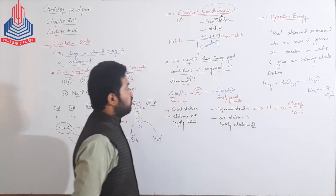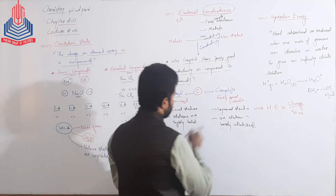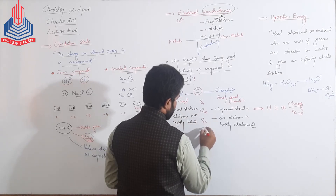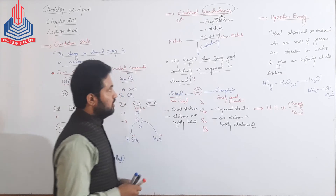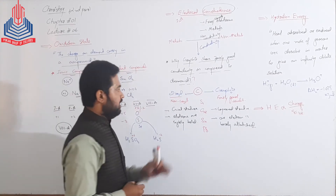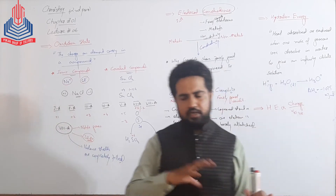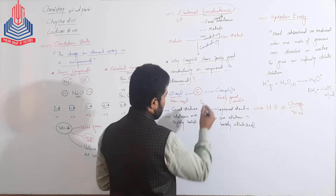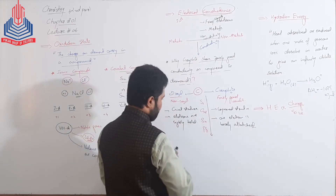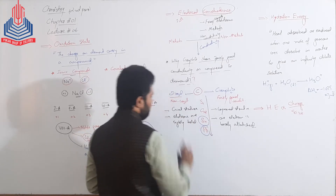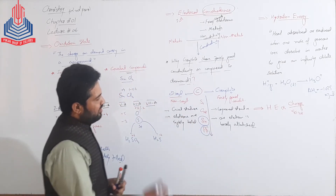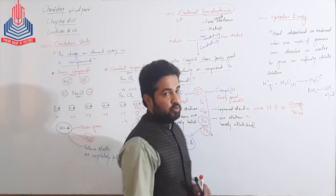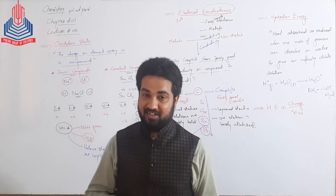Carbon کے بعد group 4A کے members ہیں: Silicon, Germanium, Tin (Stannous) اور Lead — top to bottom move کرتے ہوئے conductivity increase ہوتی ہے۔ آپ ان کی conductivity کو compare کر سکتے ہو with group first A which are very good conductors۔